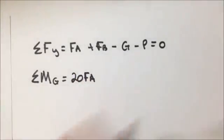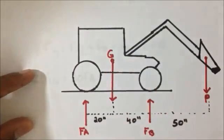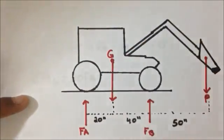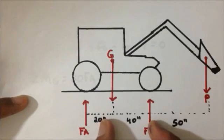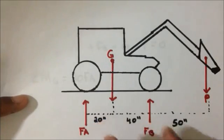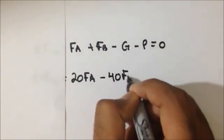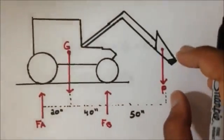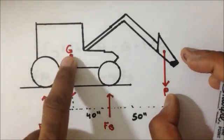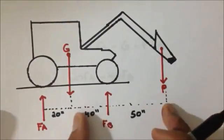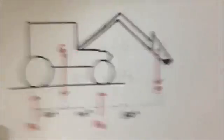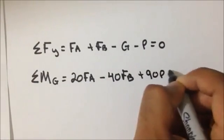The center of gravity itself will not generate any moment because the distance from the center of gravity to the pivot is zero. FB has the tendency to generate a moment in the counterclockwise direction, the negative direction we have chosen, so we multiply FB by its perpendicular distance of 40 inches — giving minus 40 FB. The weight of the gravel P has the tendency to generate a moment in the clockwise direction, so this is a positive moment: plus 90P. We set that equal to zero.